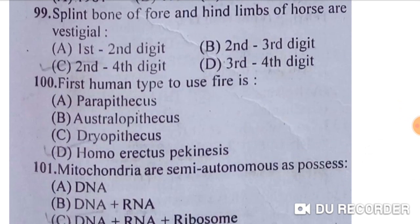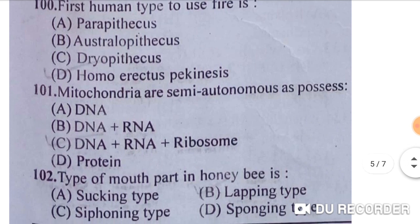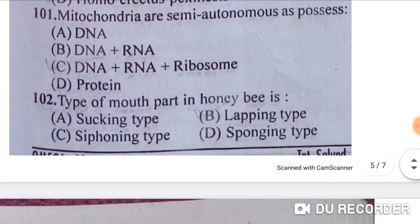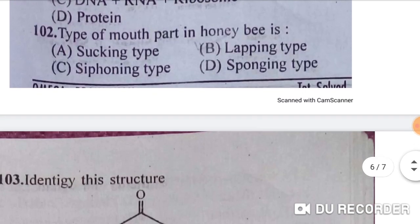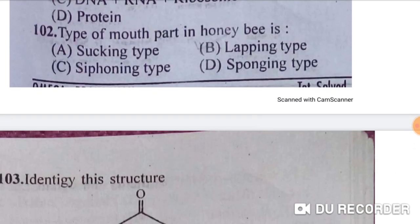Splint bones of the fore and hind limbs of the horse are vestigial second and fourth digits — option C is correct. The first human type to use fire is Homo erectus — option D is correct. Mitochondria are semi-autonomous as they possess DNA, RNA, and ribosomes — option C is correct. The type of mouthpart in a honeybee is chewing and lapping type — option B is correct.